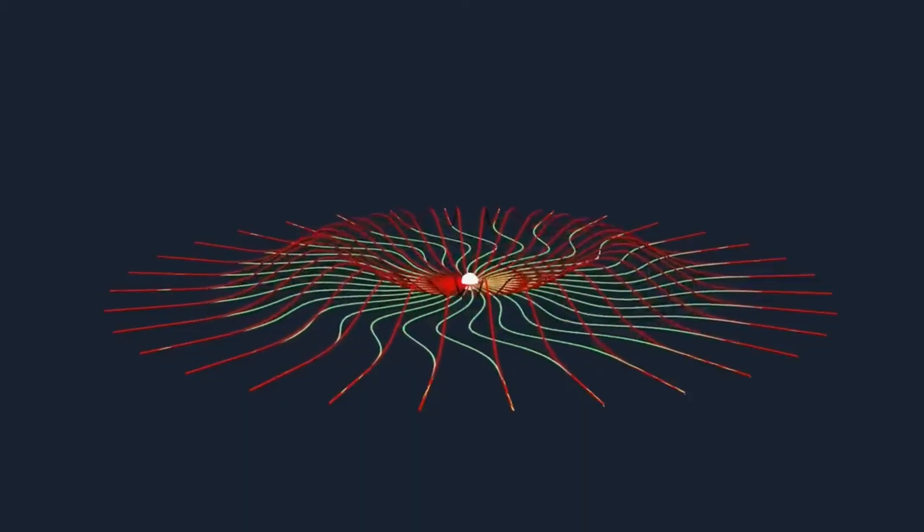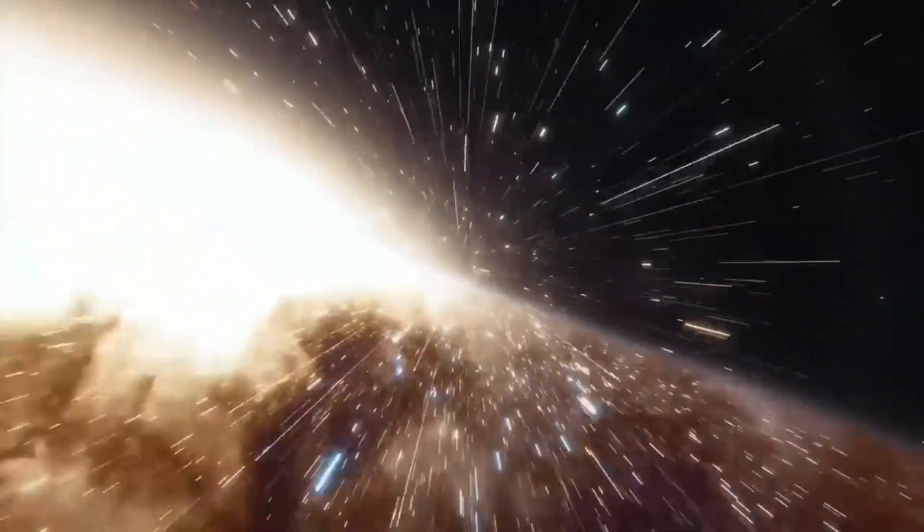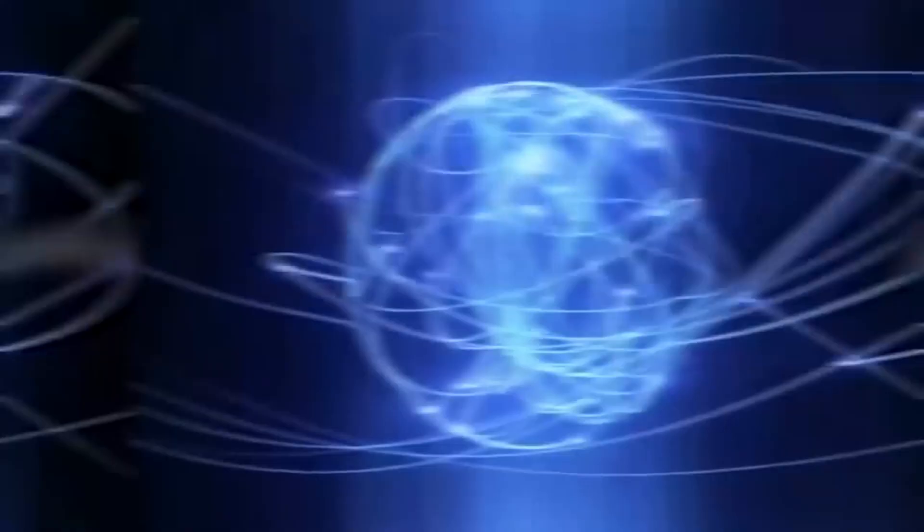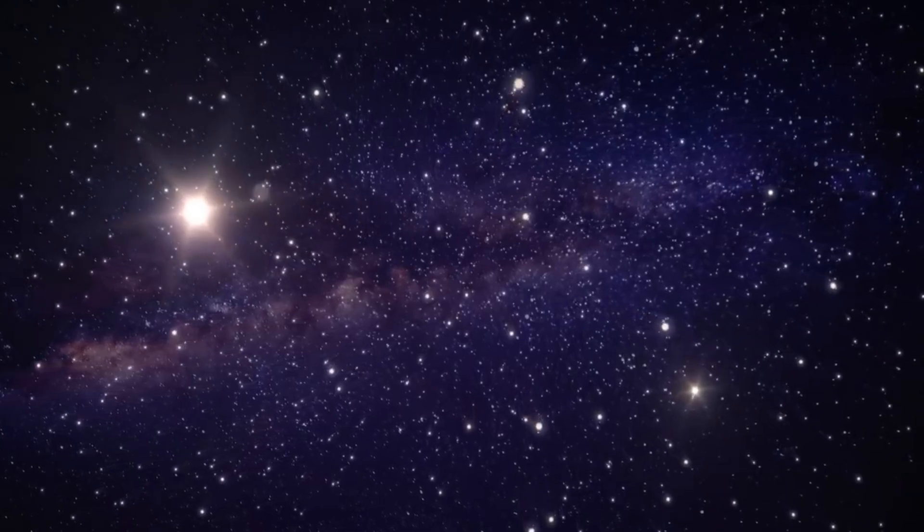According to the laws of physics, only electromagnetic waves such as light, radio waves, and gamma rays can travel at the speed of light in a vacuum. These waves are known as massless particles, which means they have no rest mass and can reach the speed of light. These waves can travel through a vacuum, such as space, without any resistance or interference.